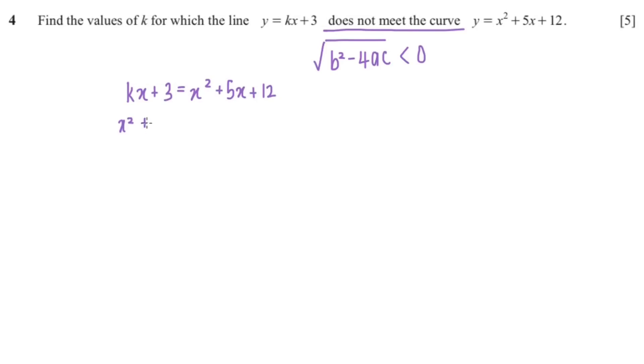so x squared plus 5x minus kx plus 9 equals 0.